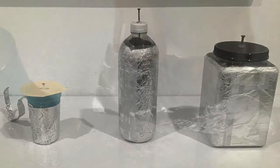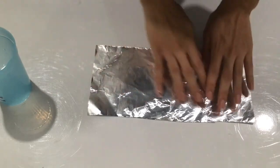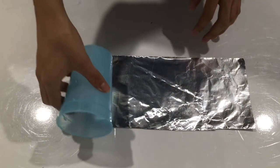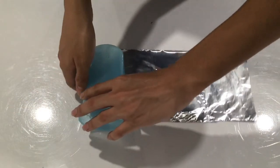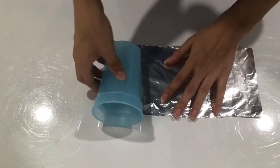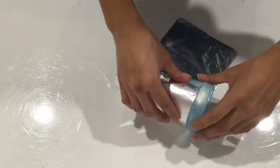To begin assembly, you're going to want to take your aluminum foil and cut out a nice smooth sheet. Next, you're going to want to take the sheet and wrap it around the side of your cup or bottle.